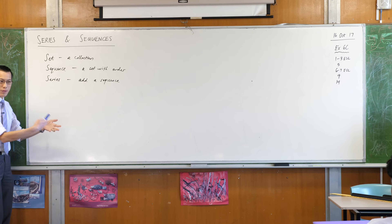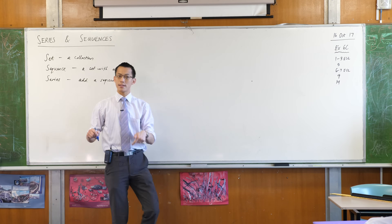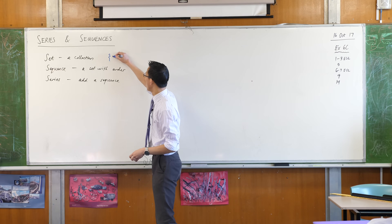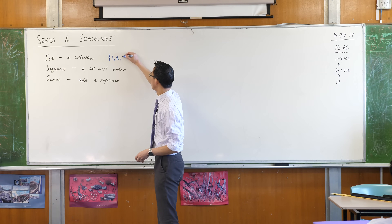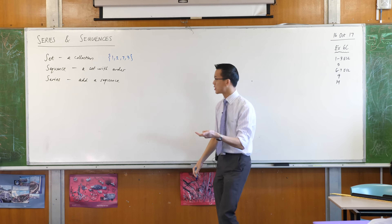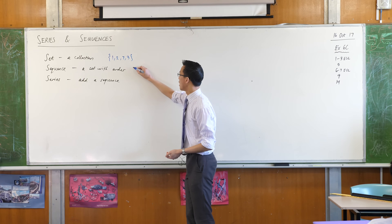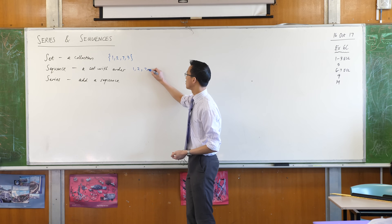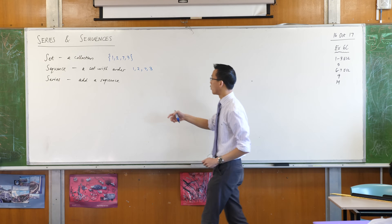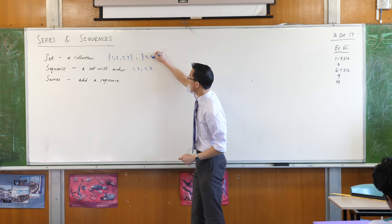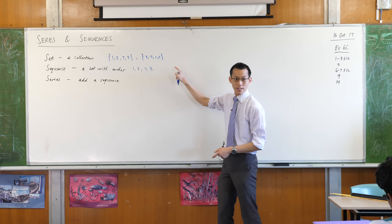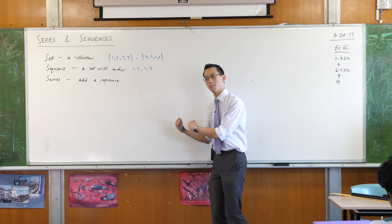Each of these we indicate with notation in its own way. For a set, you'll see a pair of curly braces — for example, {1, 2, 7, 3}. If I were to make that into a sequence, I could write 1, 2, 7, 3 without the curly braces — suddenly order is important. These two sets {3, 7, 1, 2} would be the same set, but if I write 3, 7, 1, 2 as a sequence, now the order is different and they're not the same sequence.